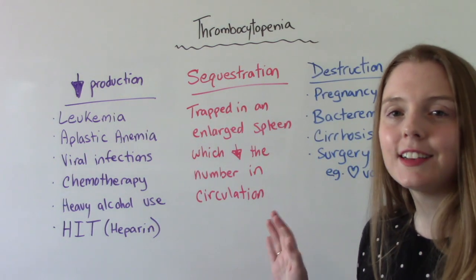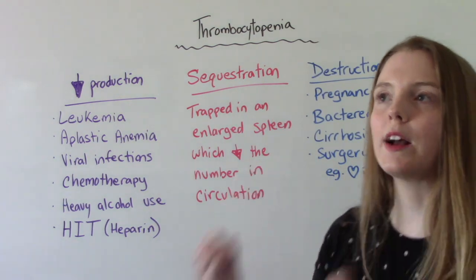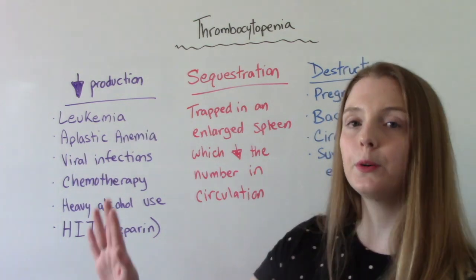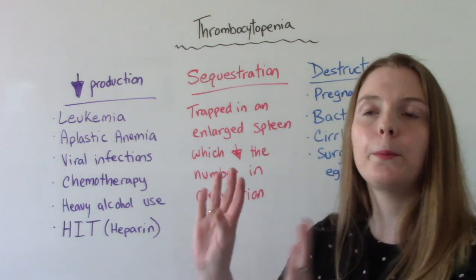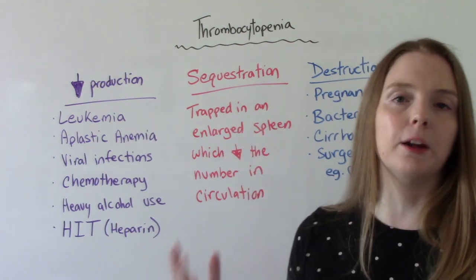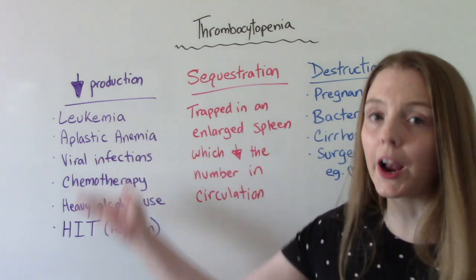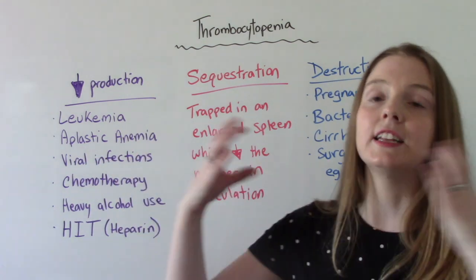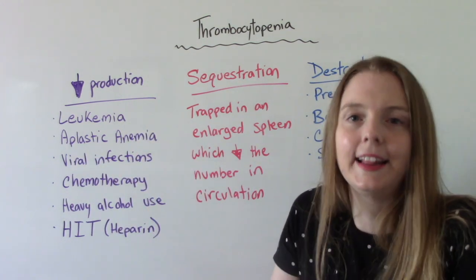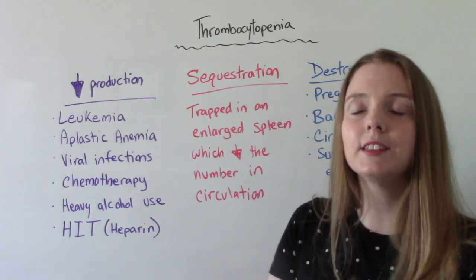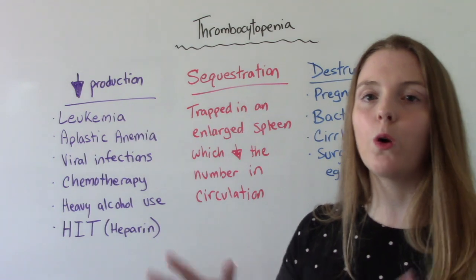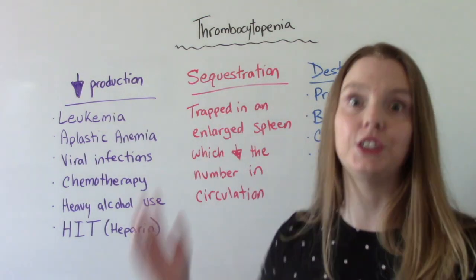Our second cause has to do with that sequestering I talked about before — the platelets are being put away and stored. What happens is the spleen is damaged from something, maybe like a viral infection, and it's enlarged. And then it starts hoarding the platelets, so because the platelets are all staying in the spleen, it decreases the number of overall platelets in your circulation.